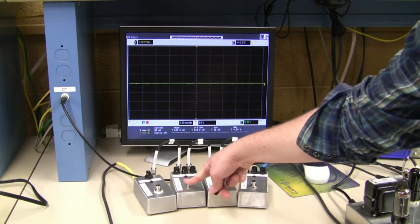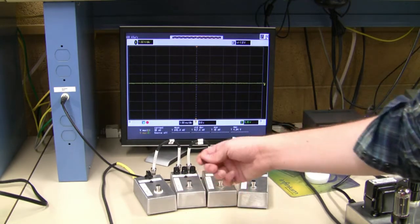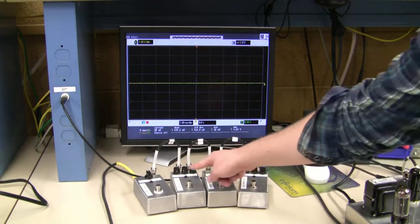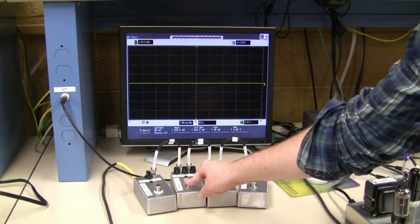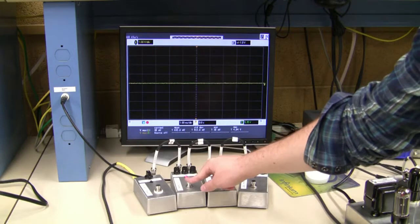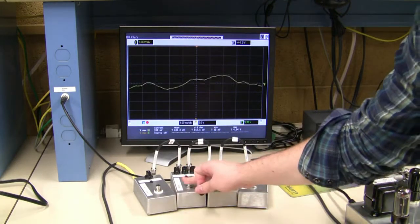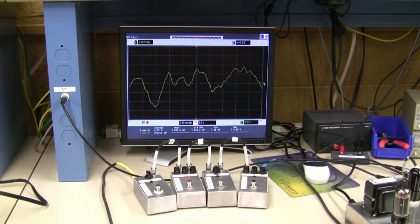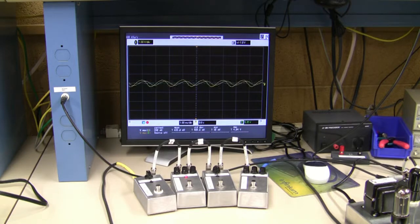Next up is the tremolo kit. What the tremolo does is it cuts the signal out intermittently on a varying speed and how deeply it cuts out the signal. So here's a clean signal, and here it is with the tremolo. Notice that periodically the signal just gets cut down to nothing.